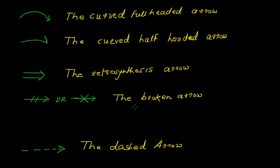This is the broken arrow and this is used to show the reaction that doesn't work. So let's take one example if we have the starting material like that with fluorine.